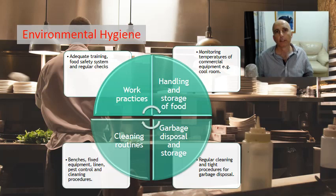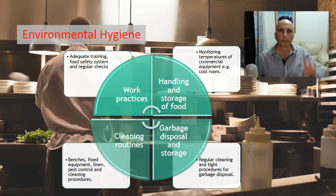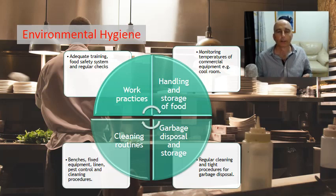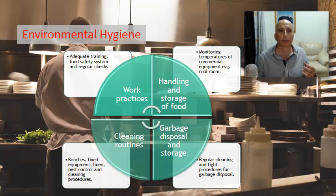Benches are cleaned, avoiding cross contamination. Next, handling of food goes all the way from when it's delivered, to correct storage in cool rooms — for example, not putting red meat over cakes — and we'll talk about that more. Right the way through to the service of food, looking at keeping the food out of the danger zone, and if we're cooling it down, cooling it quickly from 65 degrees through to 5.